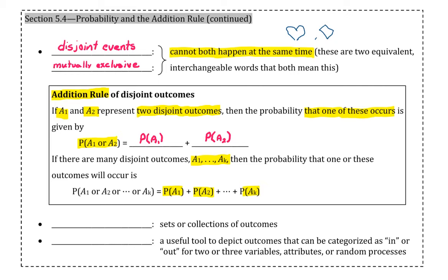An event is going to be a set or collection of outcomes. When looking at events, it is often that we will use Venn diagrams. This is a useful tool to depict the outcomes that can be categorized as in or out for two or three variables or attributes in a random process.